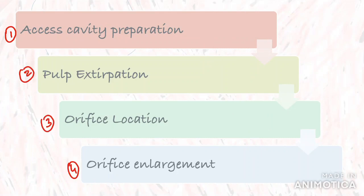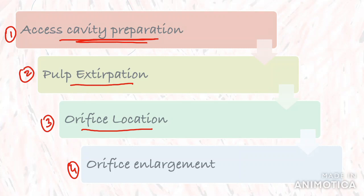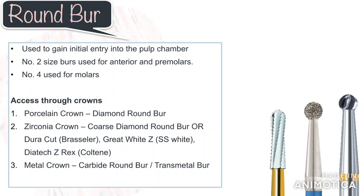First is access opening itself, where we gain entry into the pulp chamber. This is followed by pulp extirpation, which involves removing the pulp tissue and getting rid of any debris present. Then we move to orifice location, where we locate the canal orifices and determine the patency of the root canal. The final step involves orifice enlargement. Starting with the instruments used for access opening.